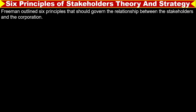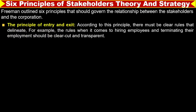Now we will discuss the six principles of stakeholder theory and strategy. Freeman outlined six principles that should govern the relationship between the stakeholders and the corporation. The first principle is the Principle of Entry and Exit. According to this principle, there must be clear rules — for example, the rules when it comes to hiring employees and terminating their employment should be clear cut and transparent.